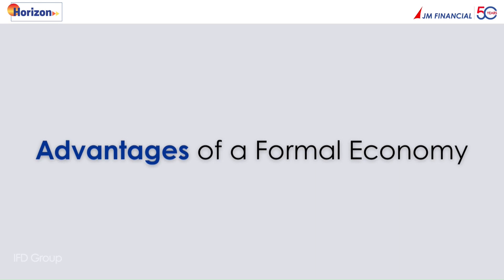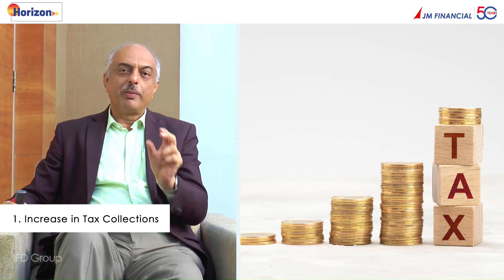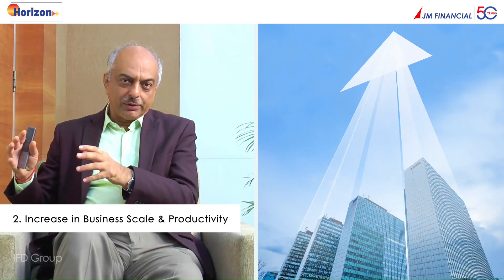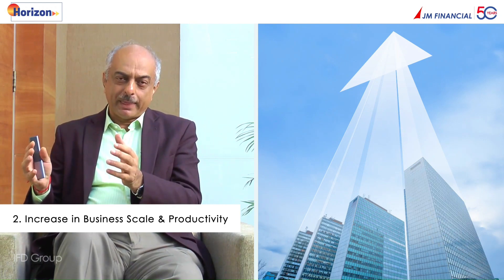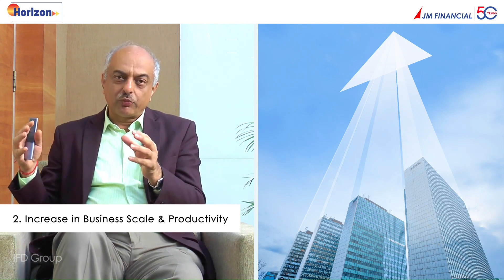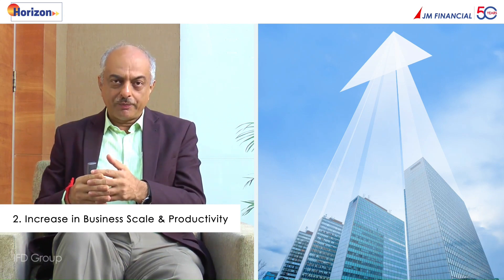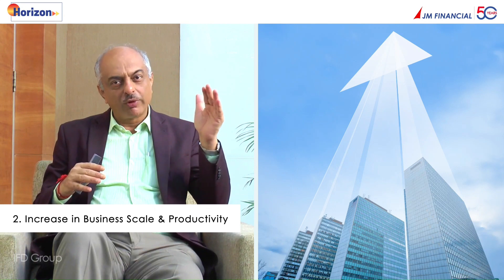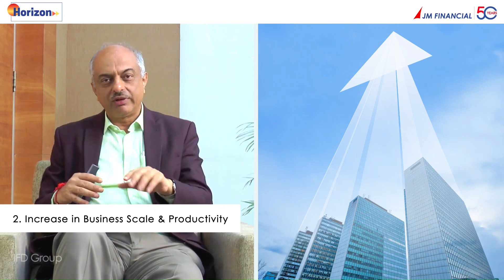Let's look at some characteristics, starting with advantages and then the limitations of this entire process of formalization. The formal economy, because the government can tax the revenues, helps increase the government's tax revenues — tax collections go up. Number two, the majority of businesses and firms in the informal sector are small in size, and because of that small size and absence of economies of scale, they can't grow bigger and their productivity remains low. The informal sector shifting to the formal sector can see both scale and productivity go up.